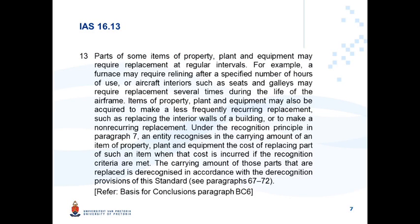Parts of some items of property, plant and equipment may require replacement at regular intervals. For example, a furnace may require relining after a specified number of hours of use, or aircraft interiors such as seats and galleys may require replacement several times during the life of the airframe. Items of property, plant and equipment may also be acquired to make a less frequent recurring replacement, such as replacing the interior walls of a building, or to make a non-recurring replacement.